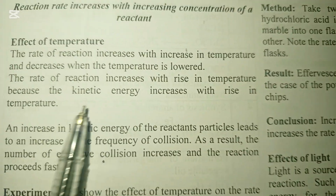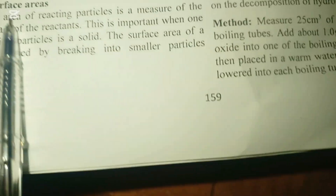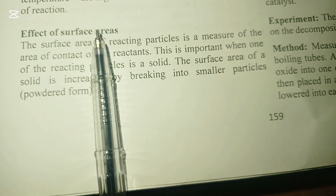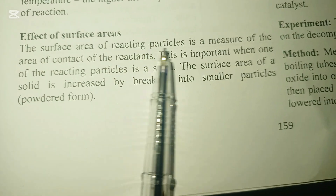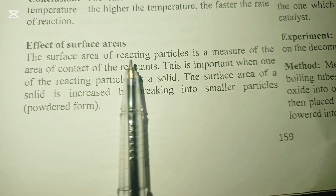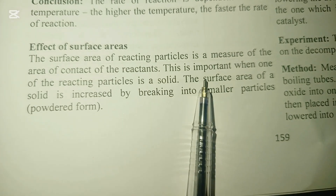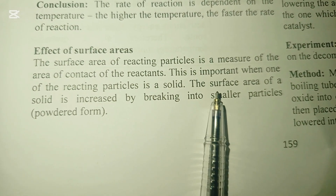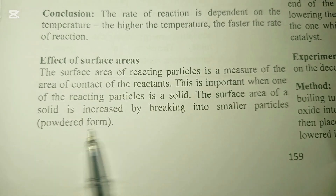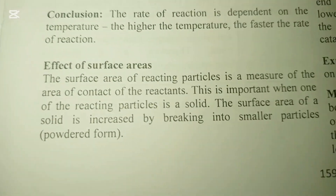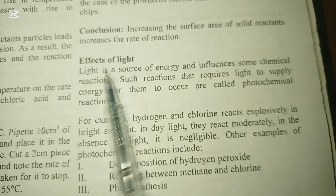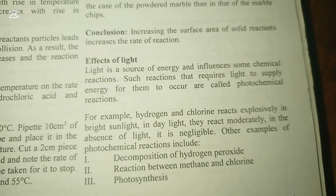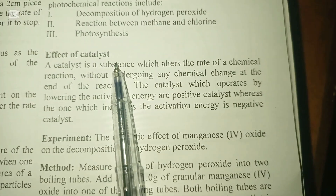Effect of surface area: when you grind something it dissolves or cooks faster, so grinding a solid increases its surface area. The surface area of a solid is increased by breaking it into smaller particles — that is, powdering it. When you increase the surface area, you increase the rate of chemical reaction. Effect of light: light can also facilitate the rate of chemical reaction, for example in photosynthesis.